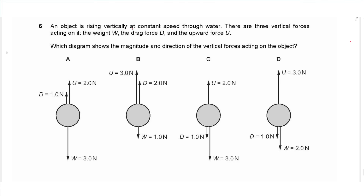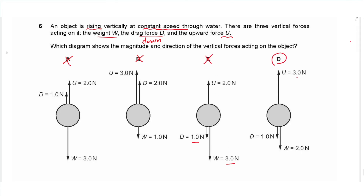Question 6: an object rises vertically at constant speed through water with three forces acting — weight W, drag D, and upthrust U. Since the object is rising, drag opposes the motion and points downwards, so any choice with drag pointing upwards is eliminated. At constant speed, forces upwards must equal forces downwards. In choice D the upward force is 3 N and total downward force is also 3 N, giving a resultant of zero. So the answer is D.